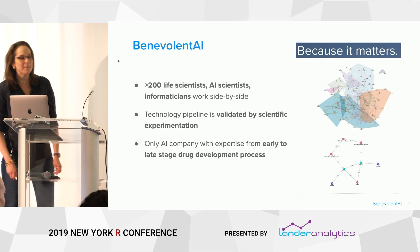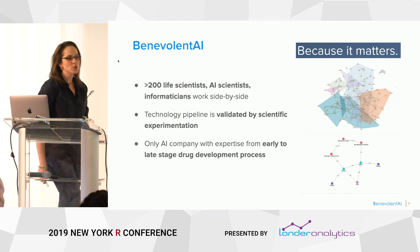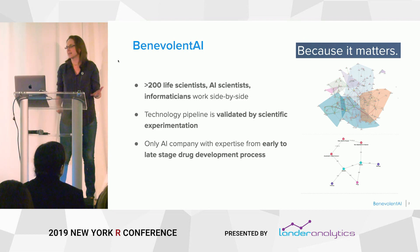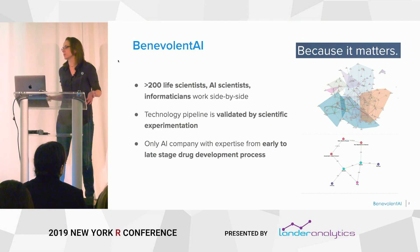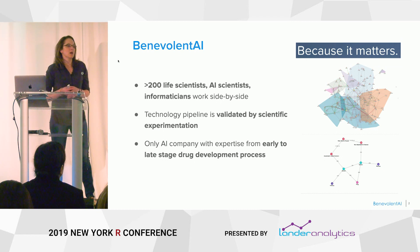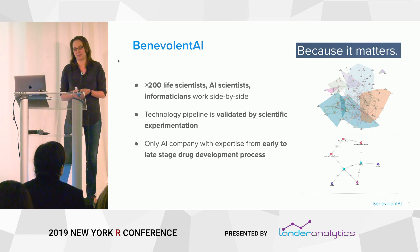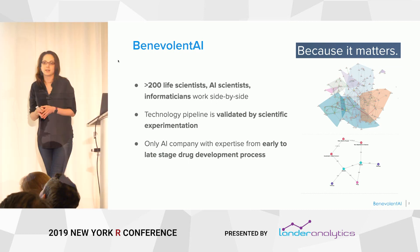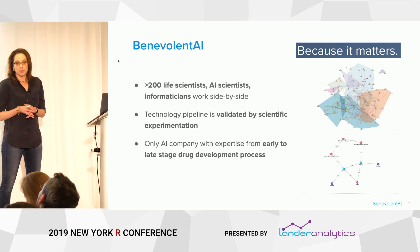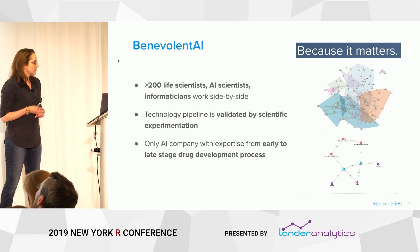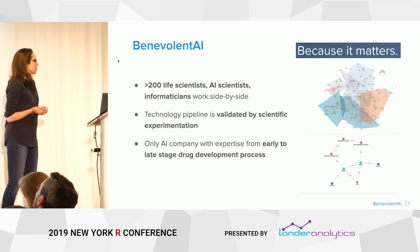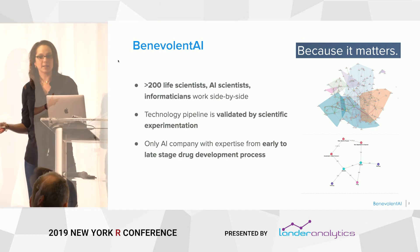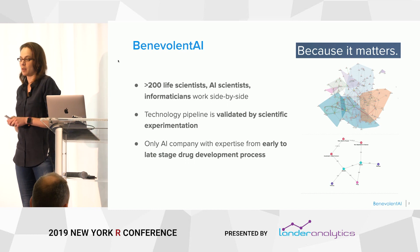A little bit about Benevolent AI. We are 200 life scientists, AI scientists, bioinformaticians, and cheminformaticians, and we all work side by side towards the purpose of rapidly accelerating drug discovery. Our technology pipeline is validated in-house by our own experimental results. We have drug discoverers and chemists as well, and we're the only AI company with capabilities from the early stage through the late stage of the drug development process.